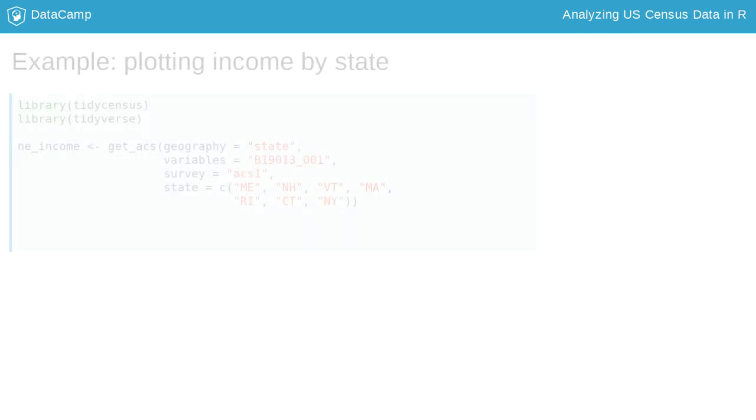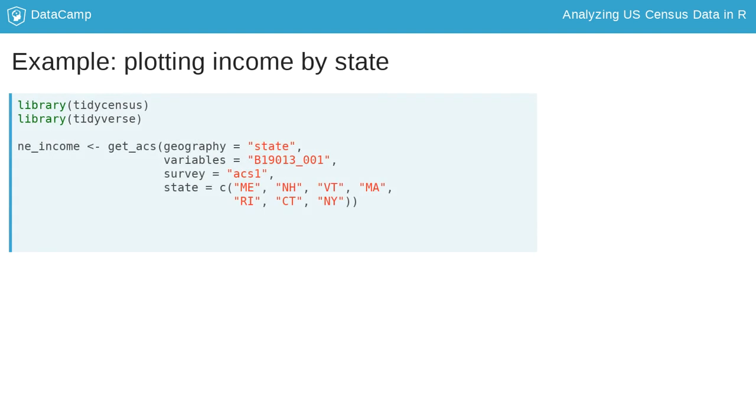The code here illustrates a basic example of how to create a visualization of ACS data using ggplot2. We'll first fetch median household income data for seven states in the northeastern United States from the 2016 one-year American Community Survey.